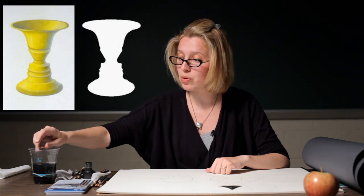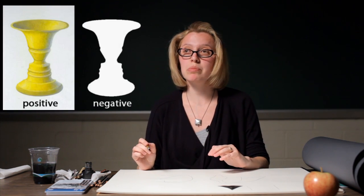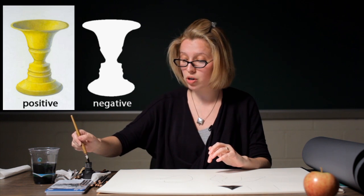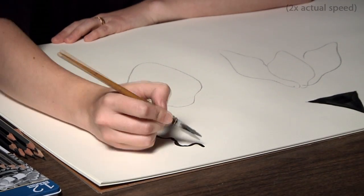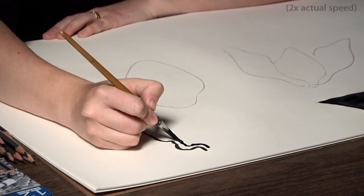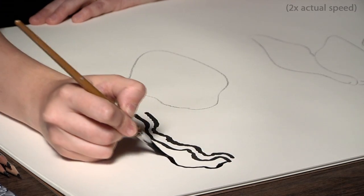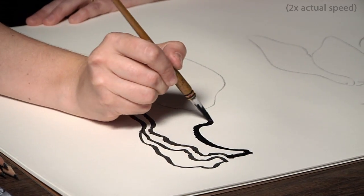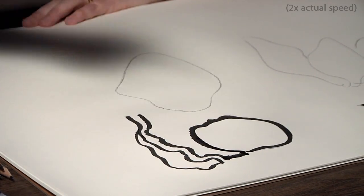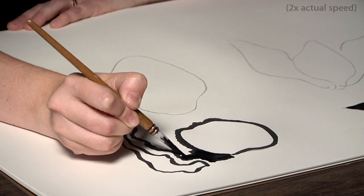You should also know about negative and positive shapes. So you can create negative and positive shapes by using charcoal or black India ink. So, for example, whatever object you have in front of you would be white and the area in between would be black. If you were drawing an apple, the actual apple would be white, and then the area around it would be black.